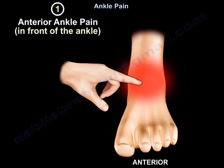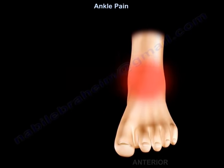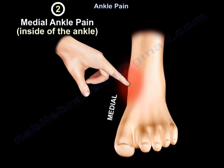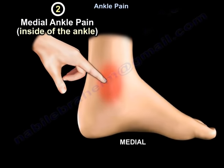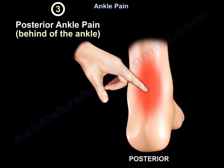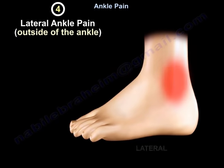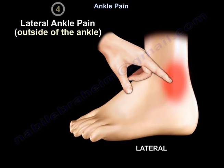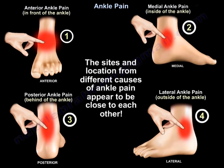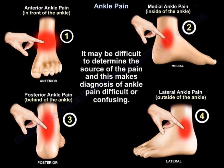The first group is anterior to the ankle. The second group is medial to the ankle, on the inside. The third group is posterior to the ankle. The fourth group is lateral to the ankle, on the outer side. The sites and locations from different causes appear close to each other, making diagnosis difficult or confusing.